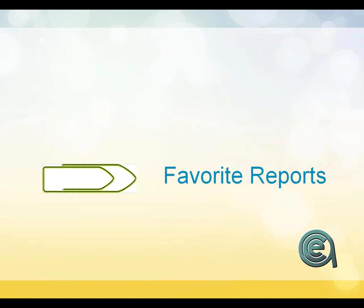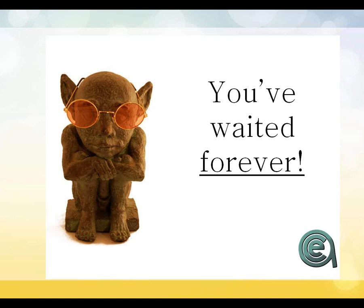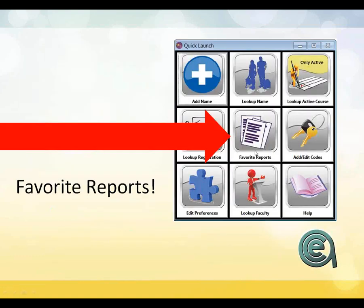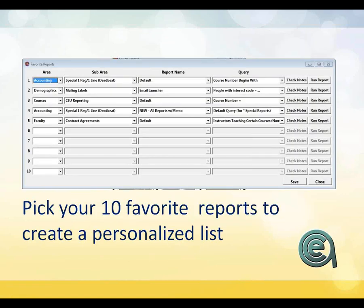Right before we start, for those of you that have not seen the SM8 preview — one of the coolest things in this process is what's called the Favorite Reports button, right in the middle of your new toolset. You can pick up to ten different favorite reports, predefined the area, the report category, and even predefine a query. You can actually view the notes on that report, hit run, and you have your report. It's a wonderful tool — something even a boss can handle.